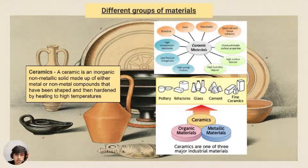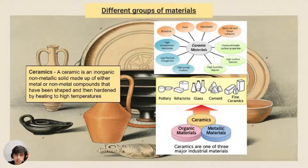The first group is ceramics. Ceramics are a combination of two or more materials — it can be a combination of metals and other materials like cement, glass, refractories, and pottery. These are different kinds of ceramics.